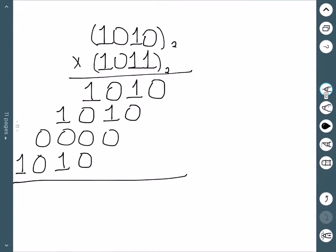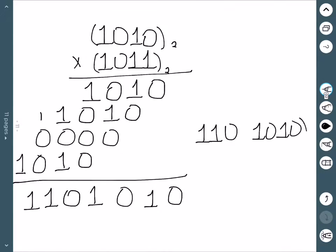And now we want to add this. This is 0, 1, 0, 1. 1 plus 1 is actually 10. So now I have a 1 and a 1. So my final answer, 1 1 0 1 0 1 0 base 2.